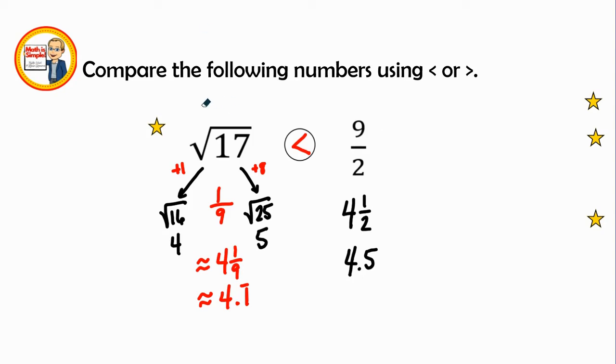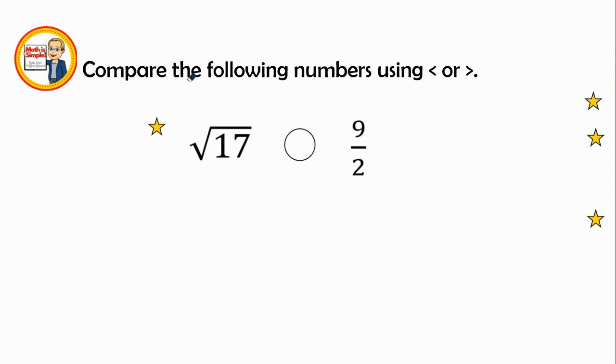All right. We have one more example. And so our final example is, let's pull a drum roll, please. Radical 49 and 7.1.